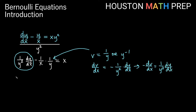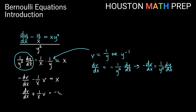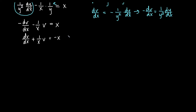So we substitute in: negative dv/dx minus one over x times v equals x. This is linear, but it's not in normal form because of the negative out front. Multiplying the entire equation by negative one, we get dv/dx plus one over x times v equals negative x. This is now linear in terms of v and x instead of y and x.